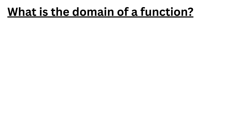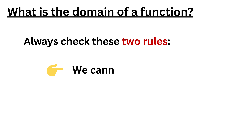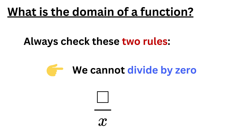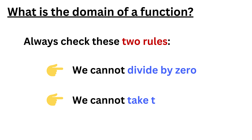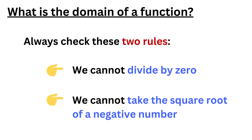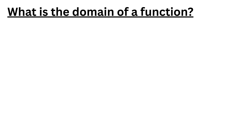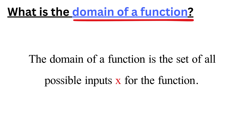In almost all of the domain problems, you only need to check the following two rules. First, we cannot divide by zero, because division by zero is undefined. This rule matters whenever a variable appears in the denominator. Second, we cannot take the square root of a negative number, because that is not defined in the real number system. In simple words, the domain of a function is all the possible values of x that you can put into a function f of x, such that it won't break any math rules.